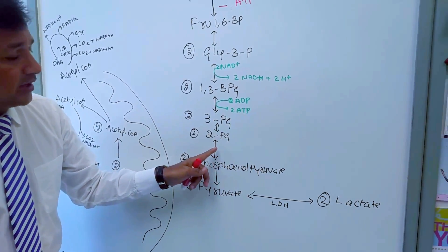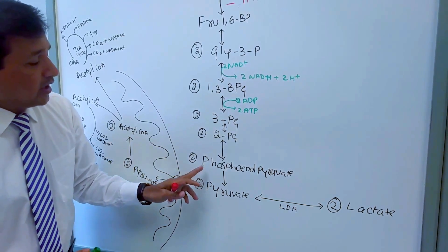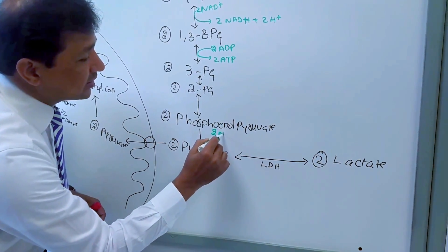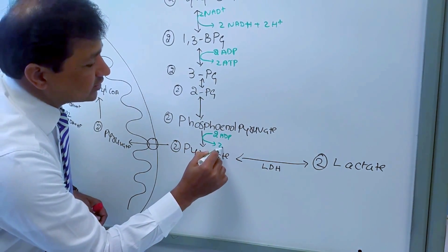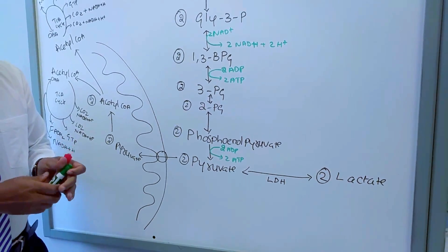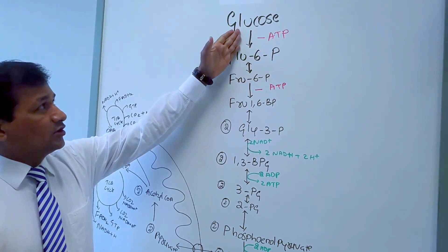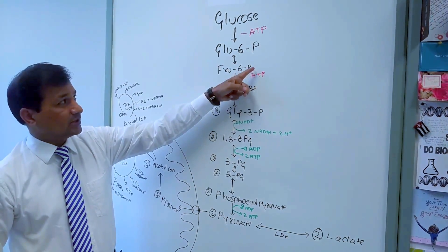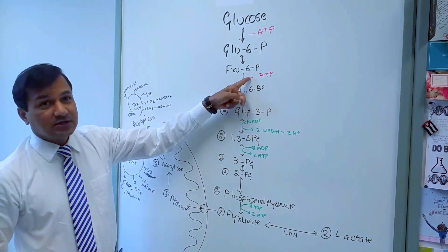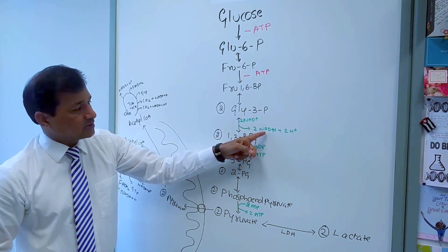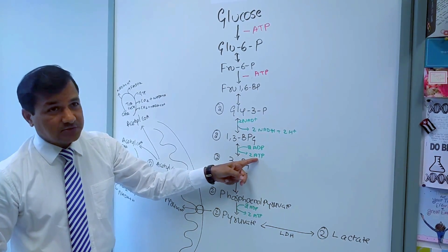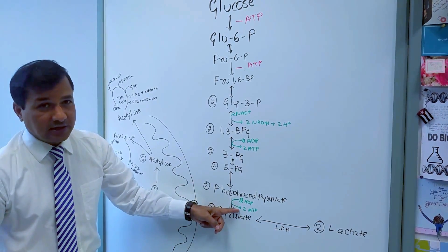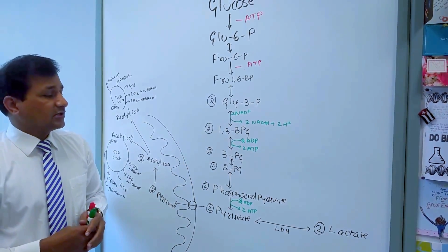3-phosphoglycerate is converted to 2-phosphoglycerate, and then 2-phosphoglycerate is converted to two molecules of phosphoenolpyruvate by enolase — no energy is produced there. Then two molecules of phosphoenolpyruvate are converted to two molecules of pyruvate by pyruvate kinase, where two ADPs go in and two ATPs are produced. So in total: two ATPs consumed initially, then two ATPs made by phosphoglycerate kinase and two ATPs made by pyruvate kinase.